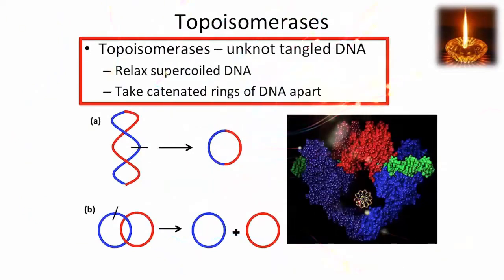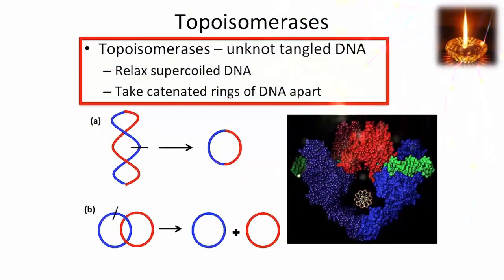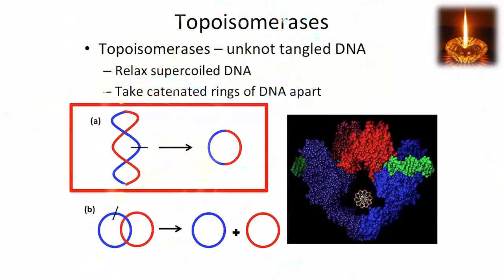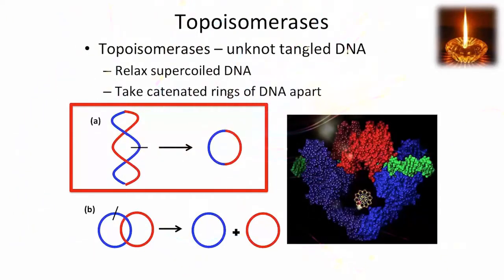We also see roles for topoisomerases outside of replication. In some cases, DNA can become supercoiled. This drawing depicts a circular piece of DNA supercoiled on the left. Treating that with a topoisomerase relaxes it to circular DNA.